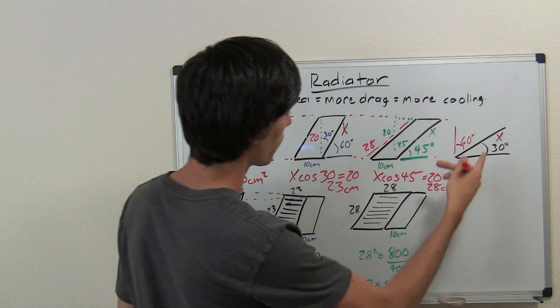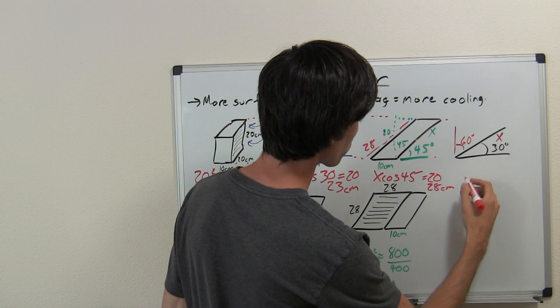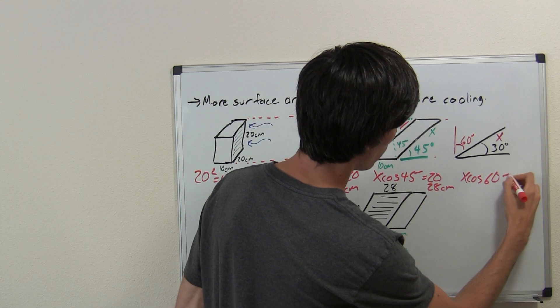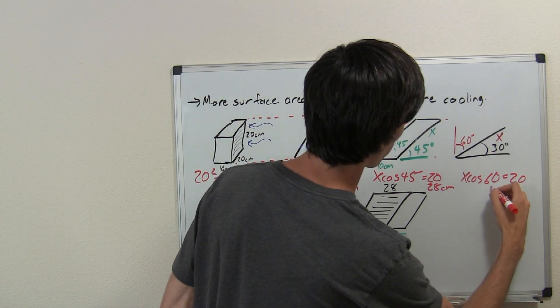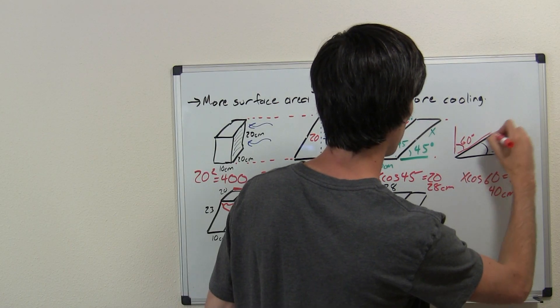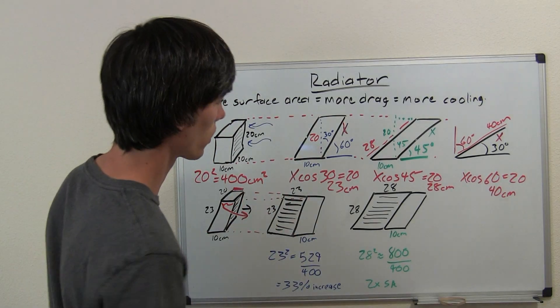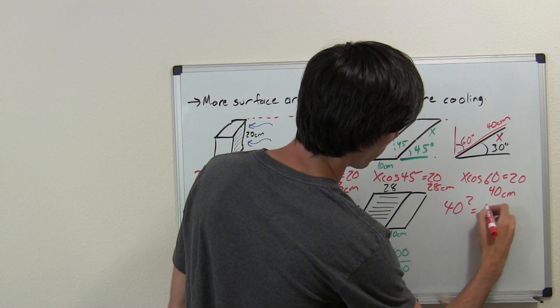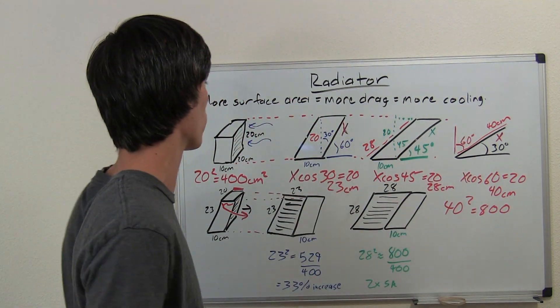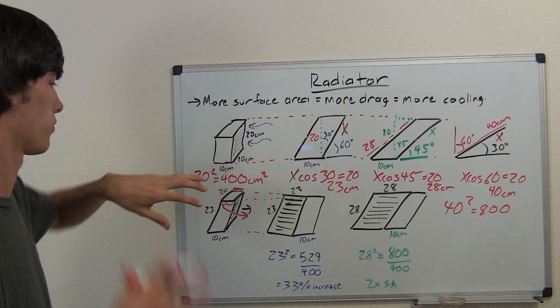And I'll explain this in greater detail. So let's say you take it even a step further and you put this at a 30 degree angle here. So you've got x cosine 60 equals 20. So then you're going to come up with 40 centimeters for this distance here. That's going to become 40 centimeters. So when you do the second shift, you're going to have 40 by 40. 40 squared, 800. So you can quadruple the surface area of the front of that radiator without changing the frontal surface area.